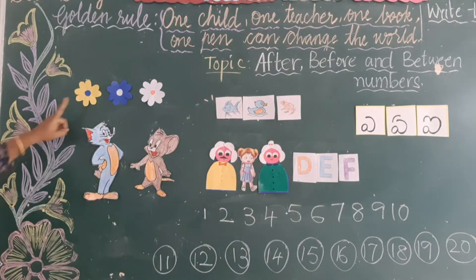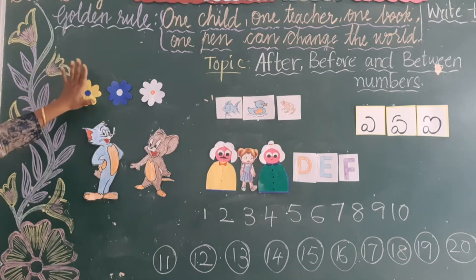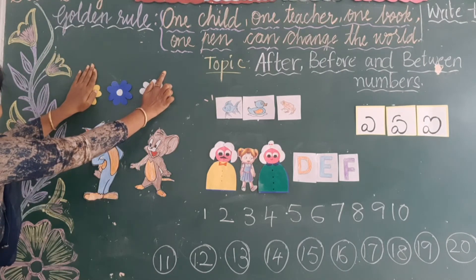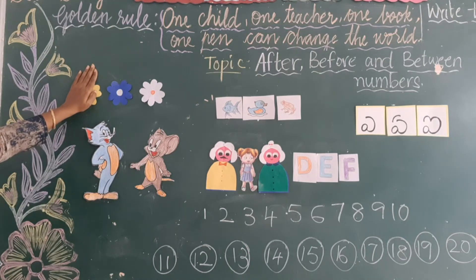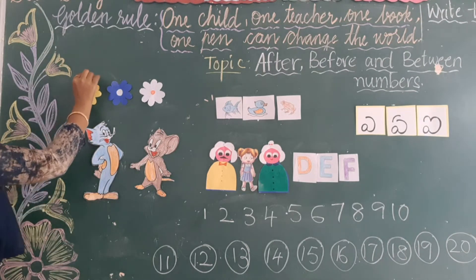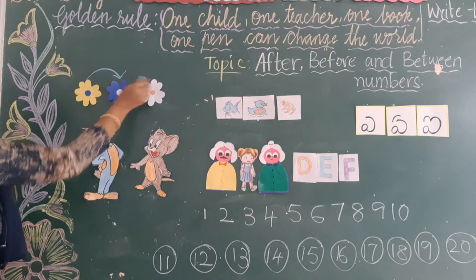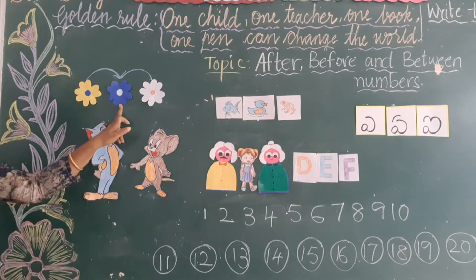Come on, look at the board. Here yellow colour flower is there, blue colour flower is there, white colour flower is there. So in between yellow and white, which colour flower is there? Yes, there is a blue colour flower. Between — 'between' means 'Madhya' — between yellow and white there is a blue colour flower.